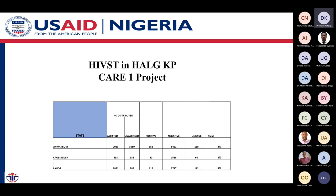This shows a summary of HIV self-testing — assisted versus unassisted — in Akwa Ibom, Cross River, and Lagos. The yield is quite encouraging for self-testing when we compare this to some of the national average. This next slide shows USAID FY21 HIV self-testing distribution by KP types.